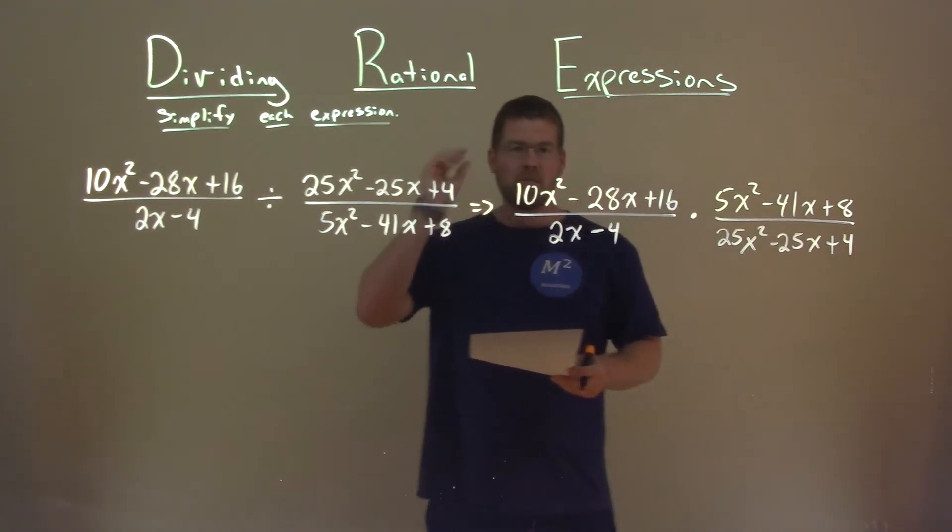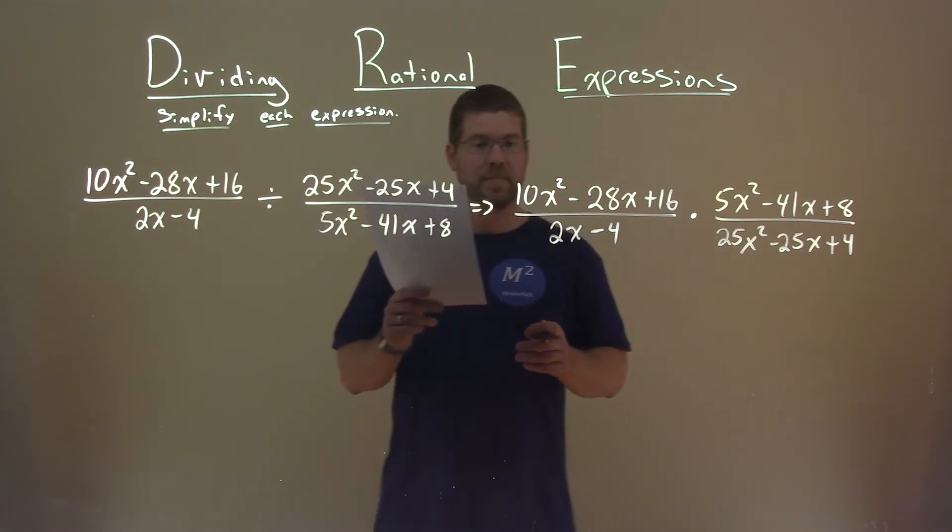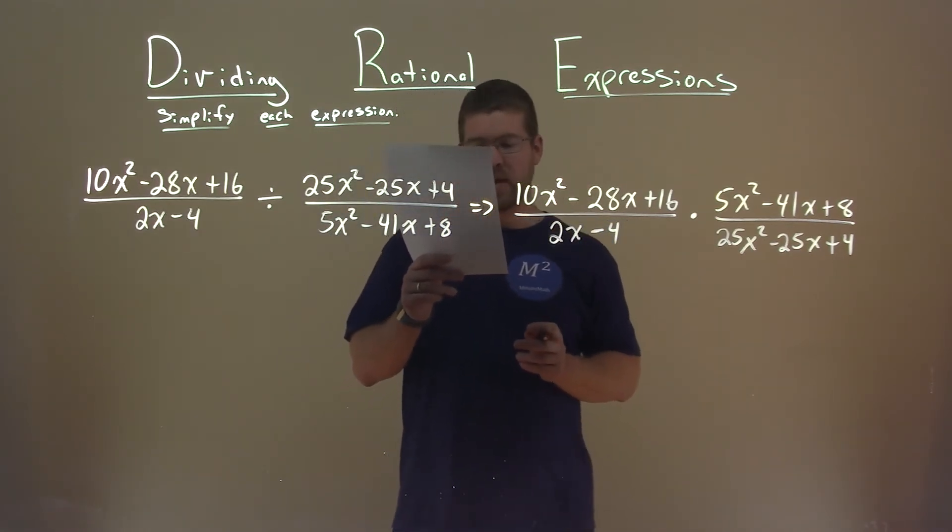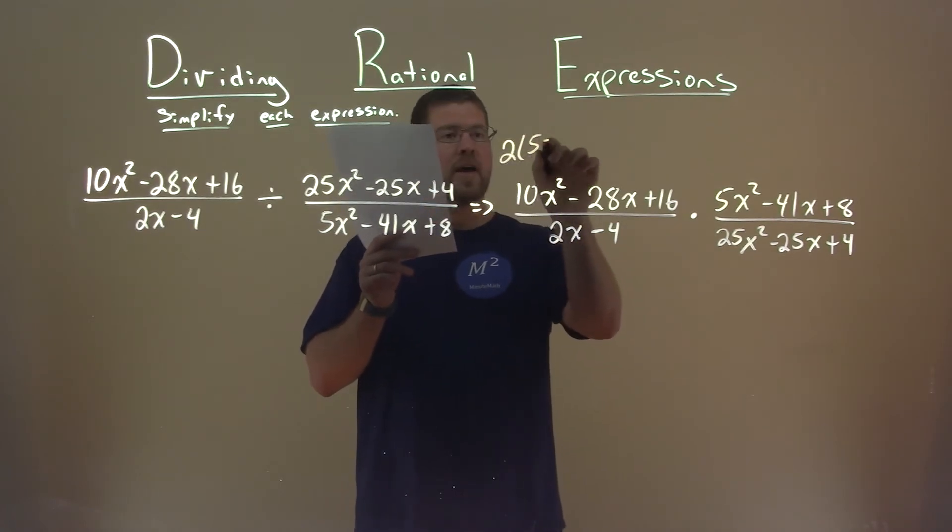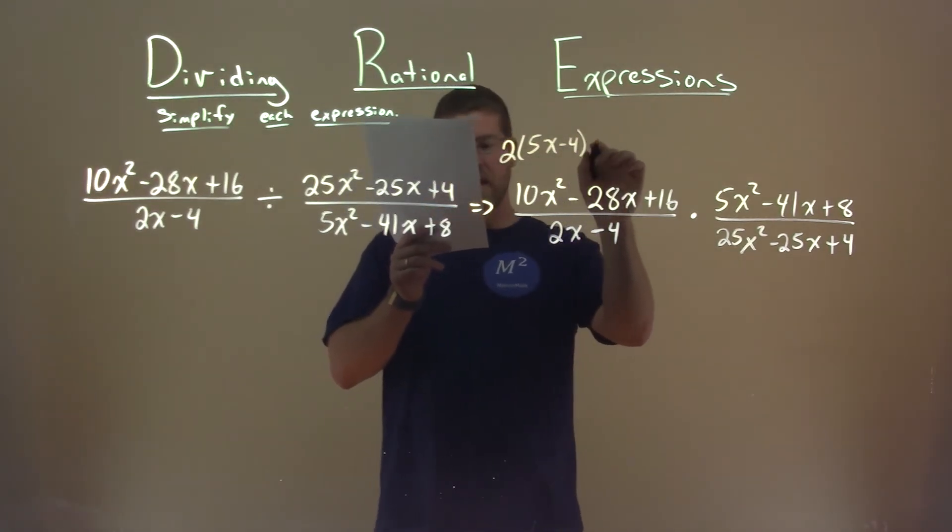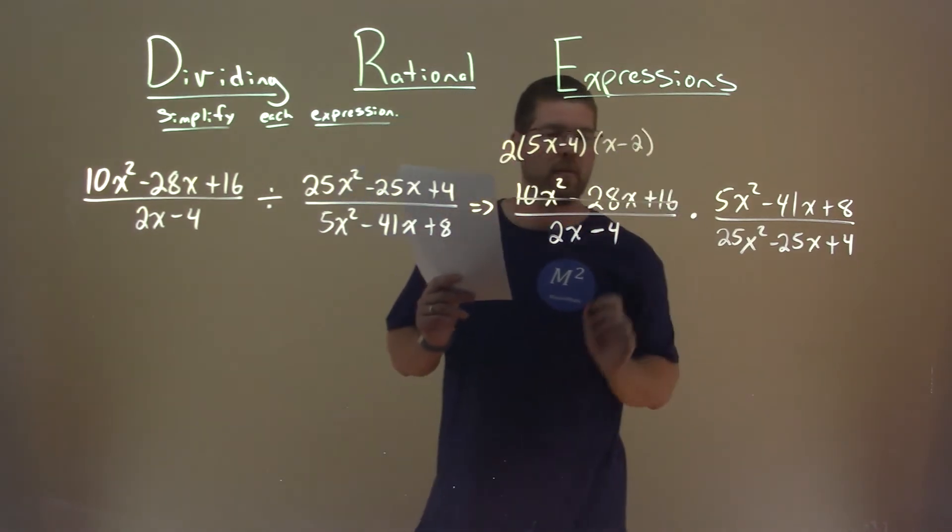All right, so now what are we going to do? Well, let's go factor what we can. 10x squared minus 20x plus 16 does factor to be 2 times 5x minus 4, and x minus 2. So replace that with this factored form.